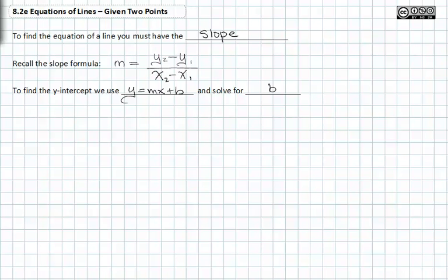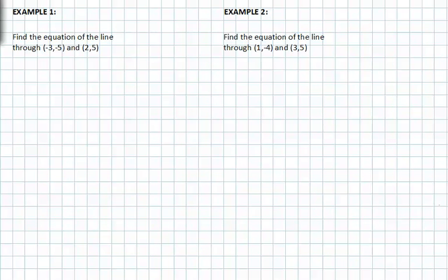Let's try some examples. In example one, we're asked to find the equation of the line through negative three, negative five and two, five. I'm going to call negative three, negative five point one — or coordinate point one — and two, five coordinate point two. Remember that to find the equation of a line, you must have slope first.